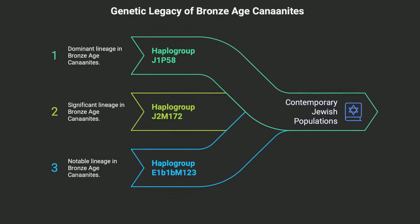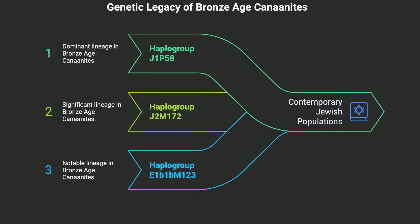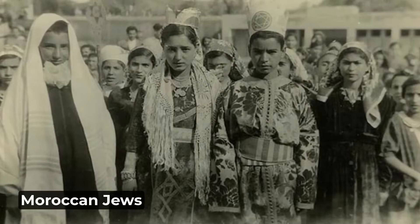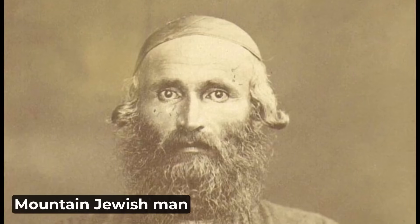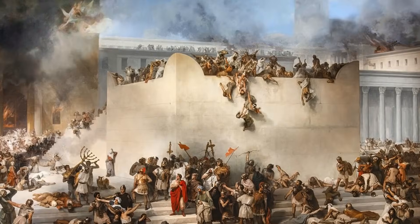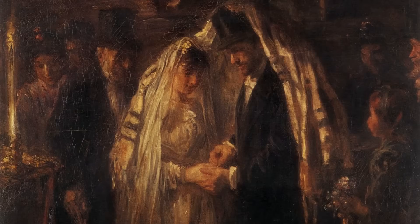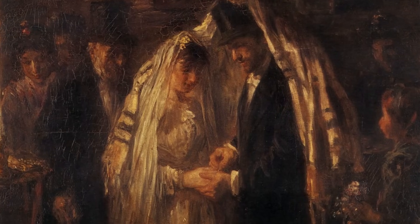The Y-chromosomal landscape of Bronze Age Canaanites was dominated by haplogroups J1-P58, J2-M172, and E1b1b-M123, lineages that continue to show high frequencies in contemporary Jewish populations worldwide. The persistence of these paternal lineages across more than three millennia demonstrates remarkable genetic continuity, despite numerous historical upheavals, migrations, and demographic changes. Mitochondrial DNA analysis from the same period reveals maternal lineages that similarly persist in modern Jewish populations, though with greater diversity reflecting the complex patterns of marriage and migration that characterized ancient Near Eastern societies.